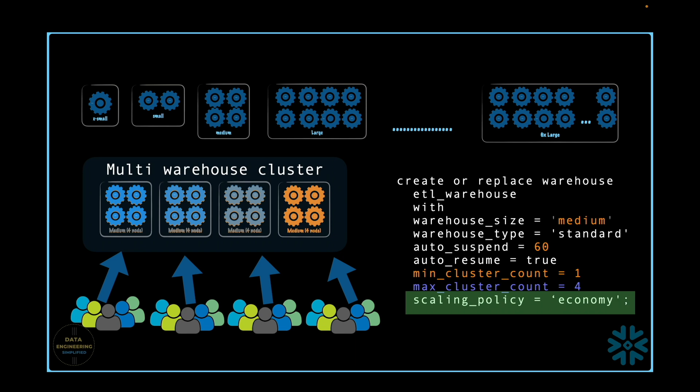We will see it by going to the Snowflake web UI screen. If your end-user can manage the query latency or a delay, set the value to economy; else keep it standard.